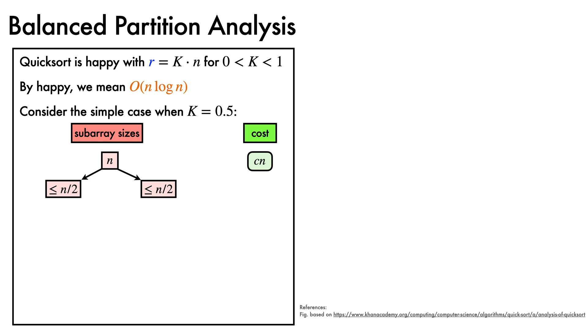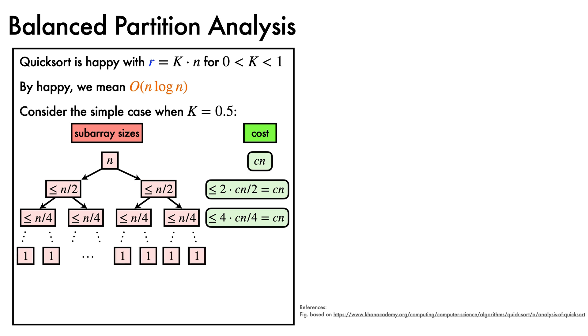So one subarray will have one less than the other, if n is odd. They will be equal in size. This has a cost of less than or equal to 2 times c times n over 2, which equals cn. We recurse on each of these, this time with a cost of less than or equal to 4 times c times n over 4, which is cn. This continues down to the base of the recursion tree, where every subarray has size 1, and no array comparisons are performed. Since the tree height is log n, and the cost at each level is less than or equal to cn, we have that the total cost is less than or equal to cn log n. And so sorting runs in big O of n log n time.